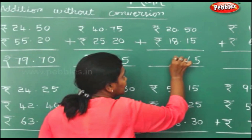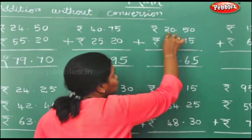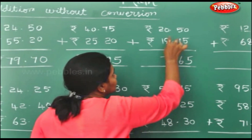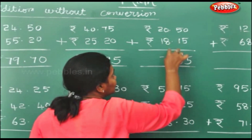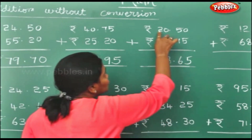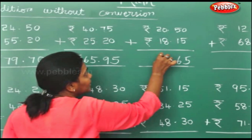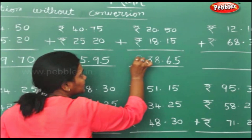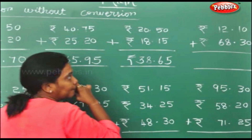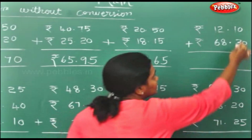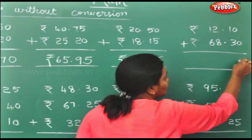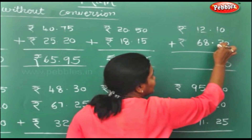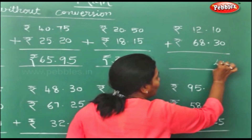0 plus 8 will be 8. 2 plus 1 will be 3. Rupees. 0 plus 0 is 0. 1 plus 3 will be 4.